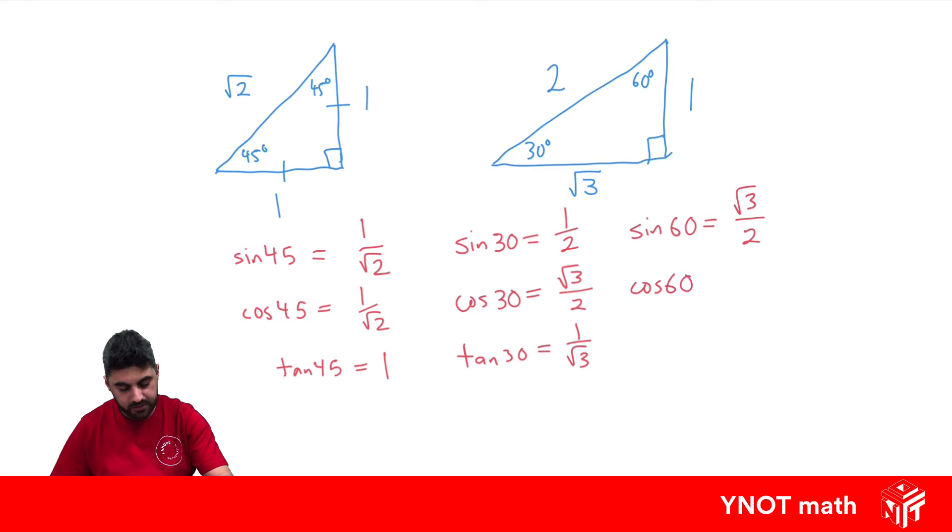Let's look at cos 60, where we get the adjacent over the hypotenuse. So 1 over 2. And tan 60, which is going to be the opposite over the adjacent. So we get root 3 over 1, which is just root 3.